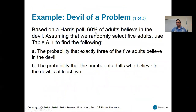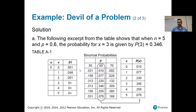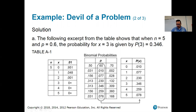Based on a Harris poll, 60% of adults believe in the devil. Assuming that we randomly select five adults, use the table to find the probability that exactly three of the five adults believe in the devil. So here they've pulled the section out of the table that we need — N equals five. We want to know the probability that exactly three of them believe in the devil. 0.6 is one of the values of P in the table. Going down to this row, this is the probability that X equals three: 0.346.